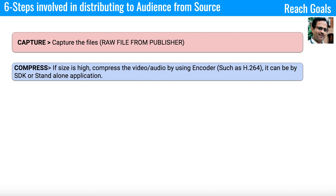Once the audio file is captured in the storage location, the next step is compress. Audio files are originally large and cannot be transported at that size, so we have to compress them. We use an encoder — it could be H.264 or another encoding format. There are also many SDKs and standalone applications available for compressing audio and video files.